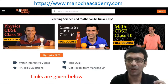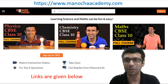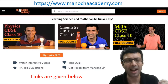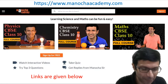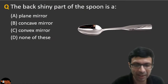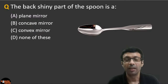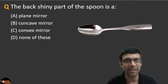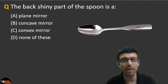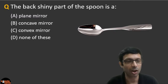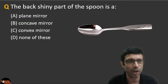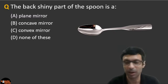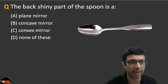I'm Sandeep Manocha and let's start this quiz. Here's the first question: the back shiny part of the spoon — what is it? A plane mirror, a concave mirror, a convex mirror, or none of these? What do you guys think?